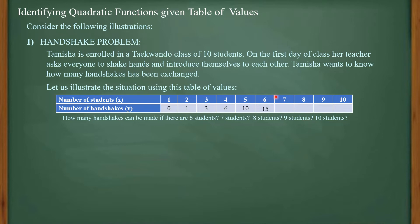For 6 students there will be 15 handshakes, since every student shakes hands with every other student. For 7 students, there will be 21 handshakes; 8 students give 28 handshakes; 9 students give 36 handshakes; and 10 students give 45 handshakes. The table above represents a quadratic function — but why?